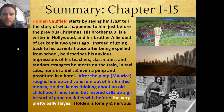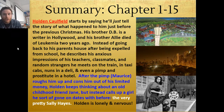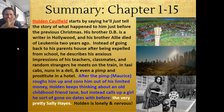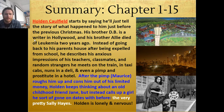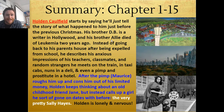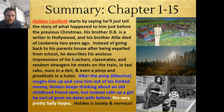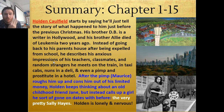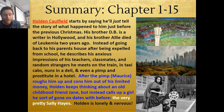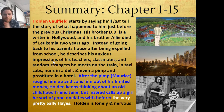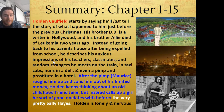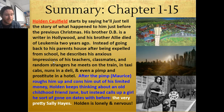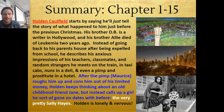We'll summarize now chapters 1 through 15. I already did a video going over this, and it ends with Holden wanting to call up Sally Hayes. A pimp, Maurice, has just roughed him up. His brother D.B. is a writer in Hollywood. His other brother Allie died of leukemia two years ago. Instead of going back to his parents' house after being expelled from school, Holden describes his anxious impressions of his teachers, classmates, and random strangers he meets on the train, in taxi cabs, nuns, in a deli, even a pimp and the prostitute Sonny in the hotel. After the pimp roughs him up, Holden keeps thinking about an old childhood friend, Jane — she kept her kings in checkers in the back row. But instead of calling Jane, he's too nervous, and he calls up the very pretty and attractive Sally Hayes.